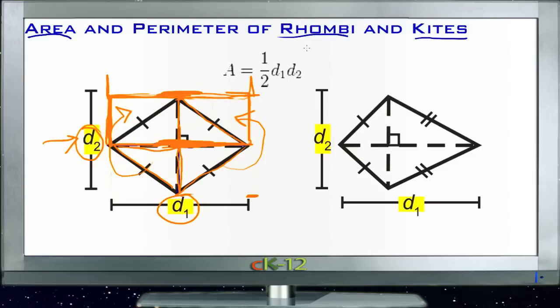So the formula for a rhombus, or for a kite, is actually similar to the formula for a triangle. It's one half base times height, very similar, except in this case base and height are the diagonals of the shape, rather than from one straight side to another straight side.